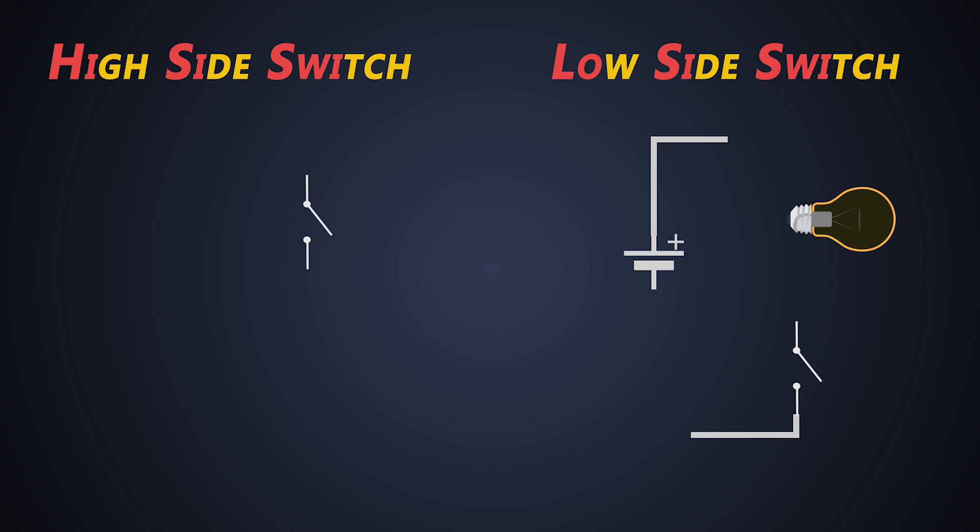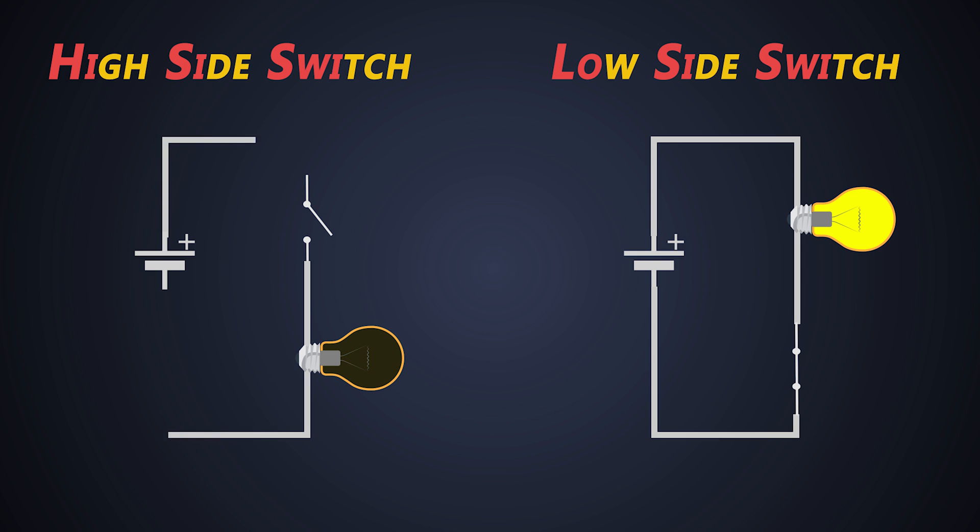In this case, we connect a load to the power supply and the switch is connected after the load, which is the returning path of the circuit. And in high side switching, the switch is connected right after the power supply and the load is connected after that.